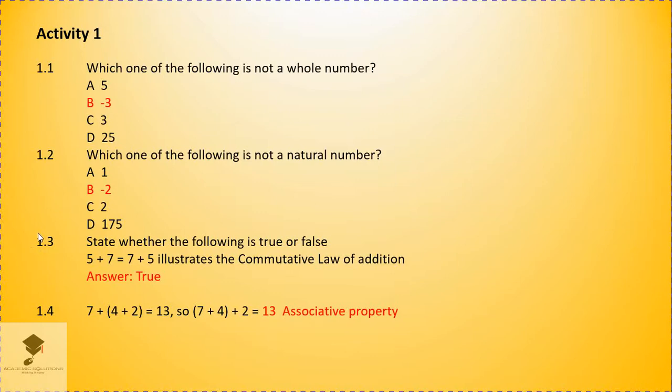Moving on to the next question. Which one of the following is not a natural number? Now, remember what we said about natural numbers? They start from 1, 2, 3 up until infinity. Now, we have minus 2 here, which is below 0. And the rest of these numbers, A, C, and D, are above 1. So, minus 2 is not a natural number. So, B is the correct answer.